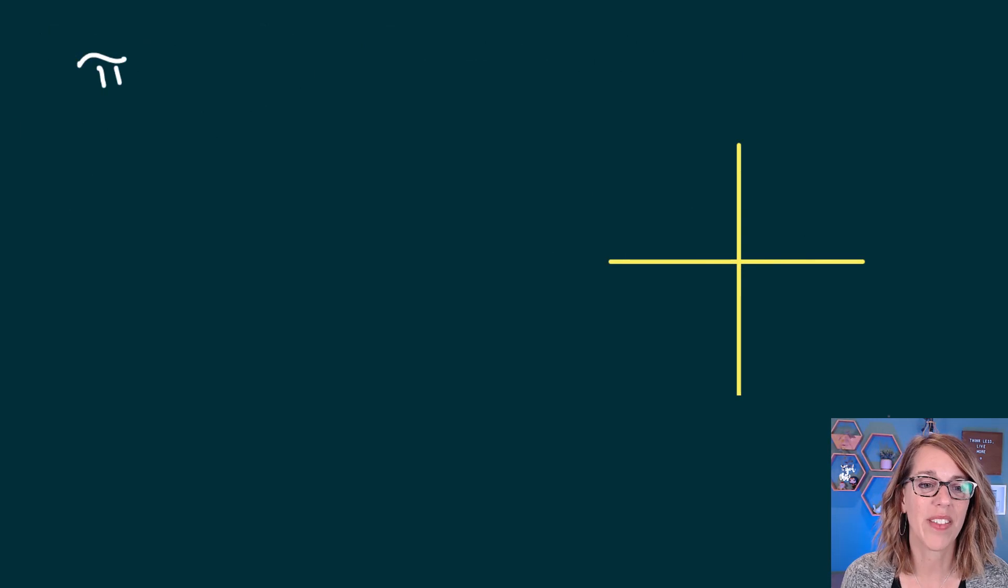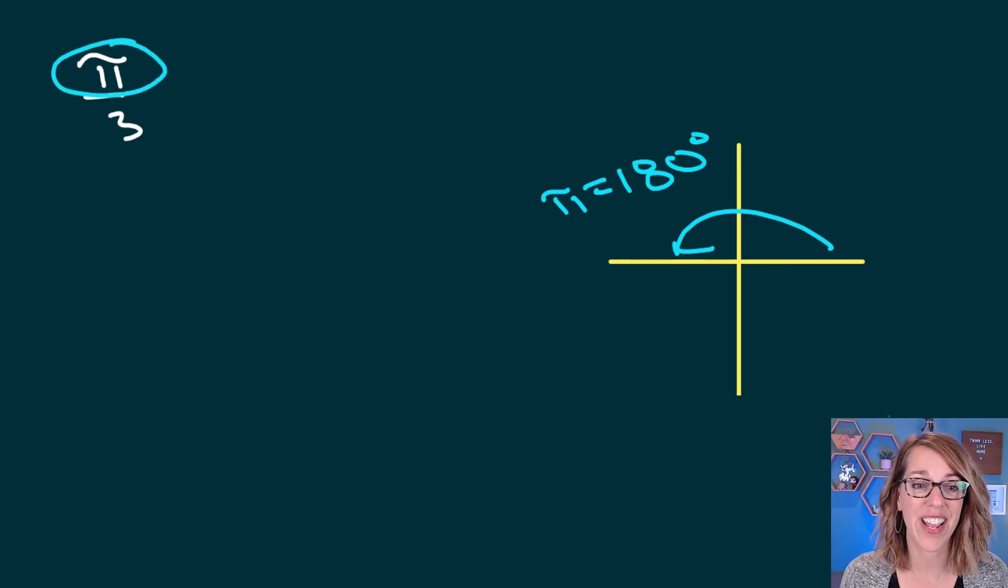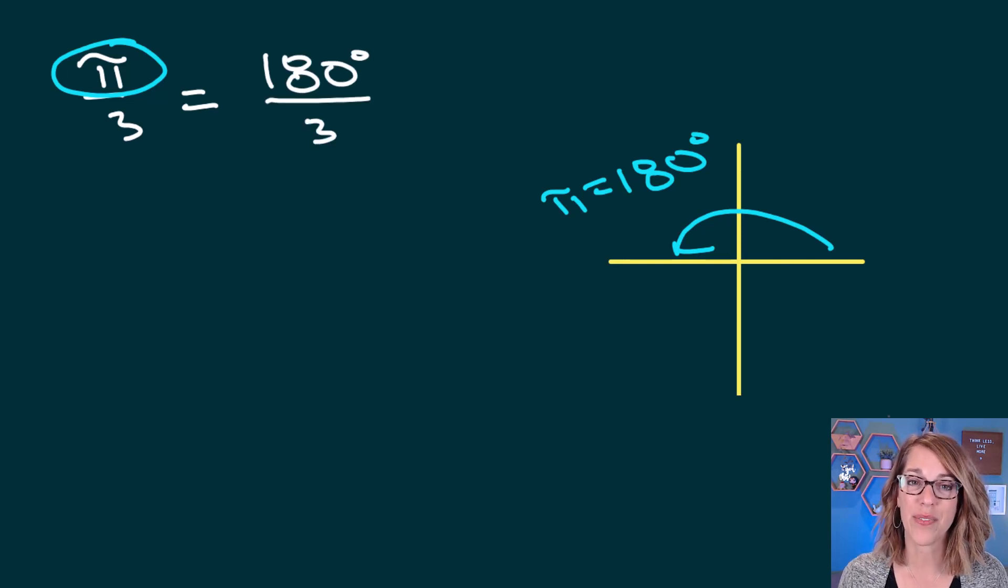This next one is π/3, and I want to show you a shortcut. So remember that we had π is equal to 180 degrees. Well, I don't even need a conversion factor. I can just replace my π with 180 degrees. So replacing π with 180, they are one in the same. Divided by three, I get 180 divided by three, or 60 degrees.